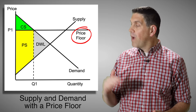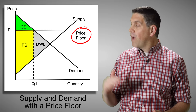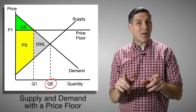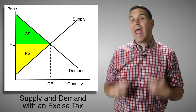It's the same thing if the government had a binding price floor. If the price can't fall, consumer surplus would be here, producer surplus would be here, and again we have deadweight loss. The market is not producing the amount that society wants, which means it's not allocatively efficient.